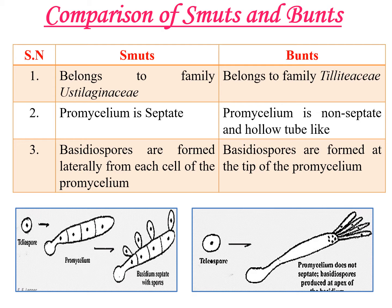In smut fungi, basidiospores arise laterally from the promycelium. In the case of bunt fungi, the promycelium is non-septate — there is no septation and it has a hollow tube-like structure bearing basidiospores in a terminal position, formed at the tip of the promycelium. Basidiospores are usually four in number in smut fungi, whereas in bunt fungi there are more than four — usually eight.